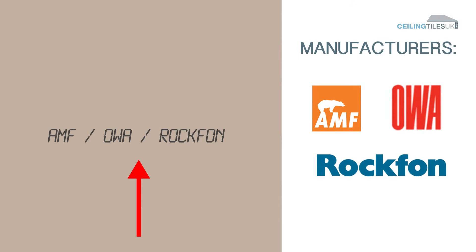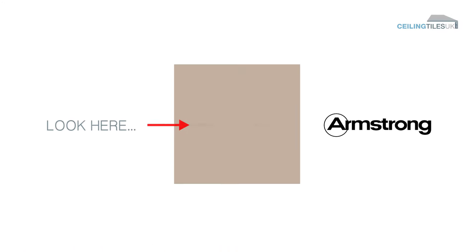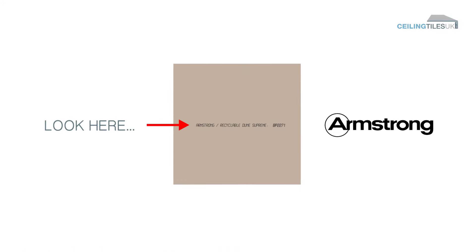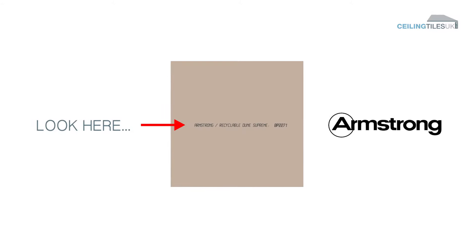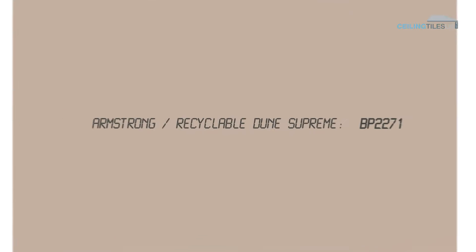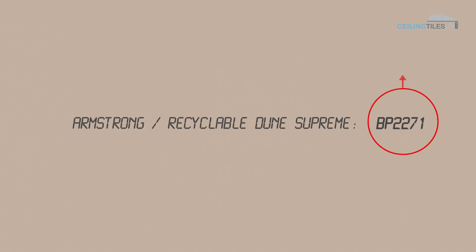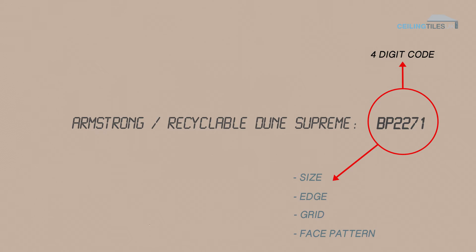Most manufacturers, such as AMF, OWA and Rockfon, will print their company name, whereas the largest manufacturer, Armstrong Ceilings, tends to print a full product code, which can help easily identify the exact ceiling tile. The codes are typically printed in a four-digit format following the letters BP. This, to us, confirms the exact size, edge, grid and face pattern for the tiles you are trying to match.